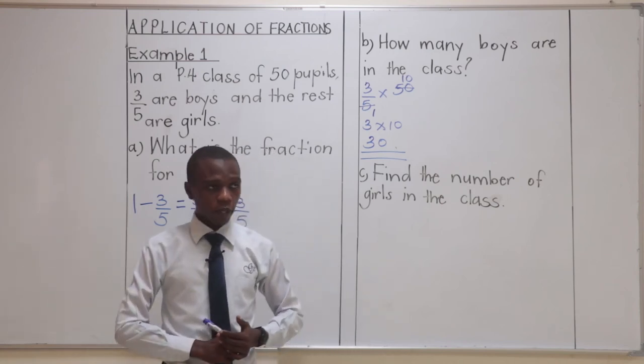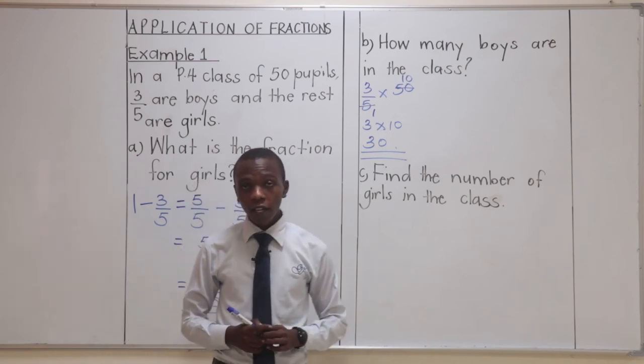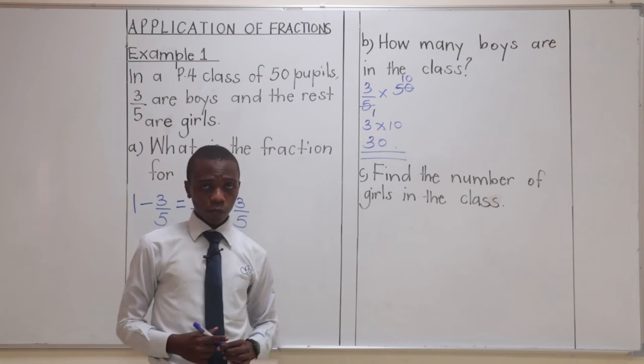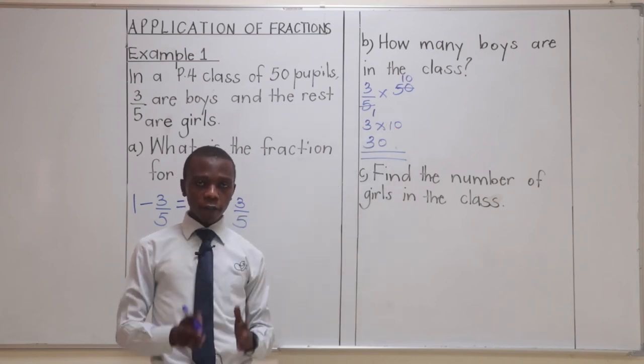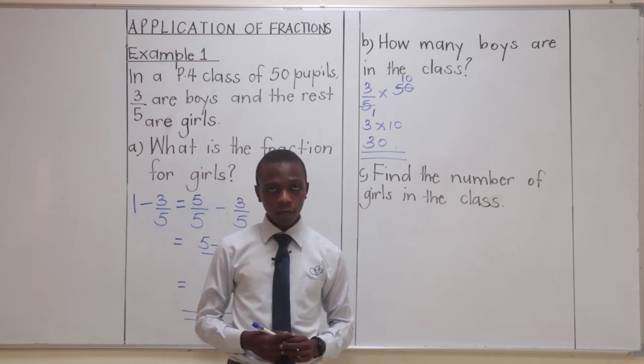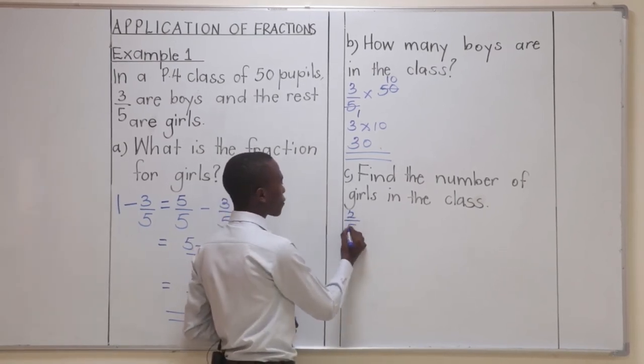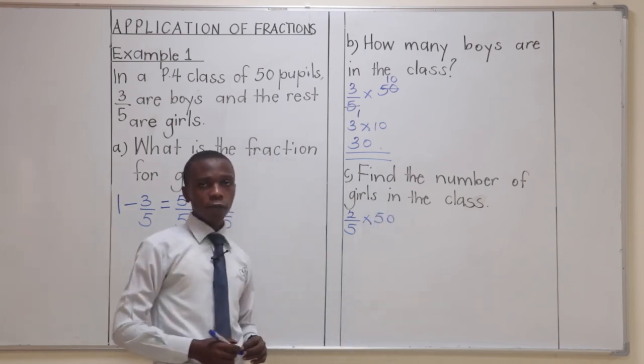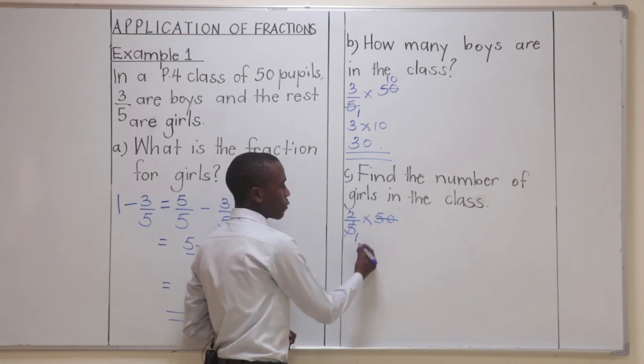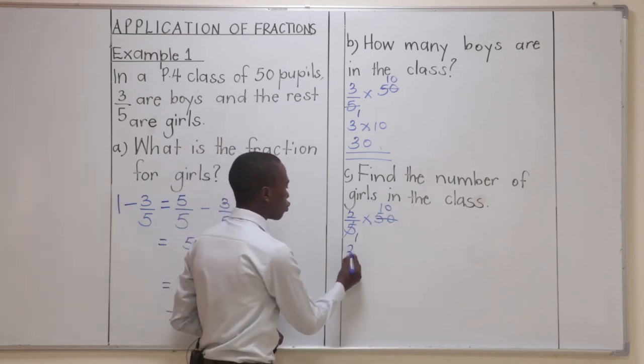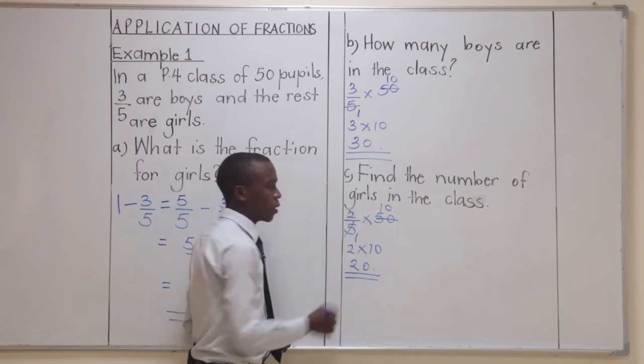I guess everybody is with me. Now, let's go next. They're asking, find the number of girls in the class. There are two ways, but we can choose to use the way we found the number of boys. That is, we multiply the fraction for the girls by the total number of children in the class. We all remember the fraction for the girls. We've got it as 2 out of 5. So, we'll say 2 out of 5 times the total number of children in class, which is 50. If we take the way we found the number of boys up there, we divided 5 by 5 to get 1 and 50 by 5 to get 10. So, that we have 2 times 10. And what is the answer here? It is simply 20.